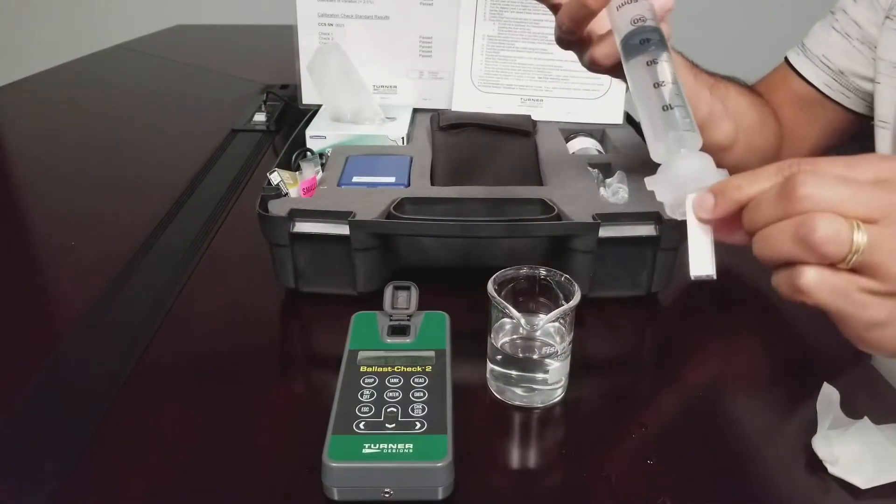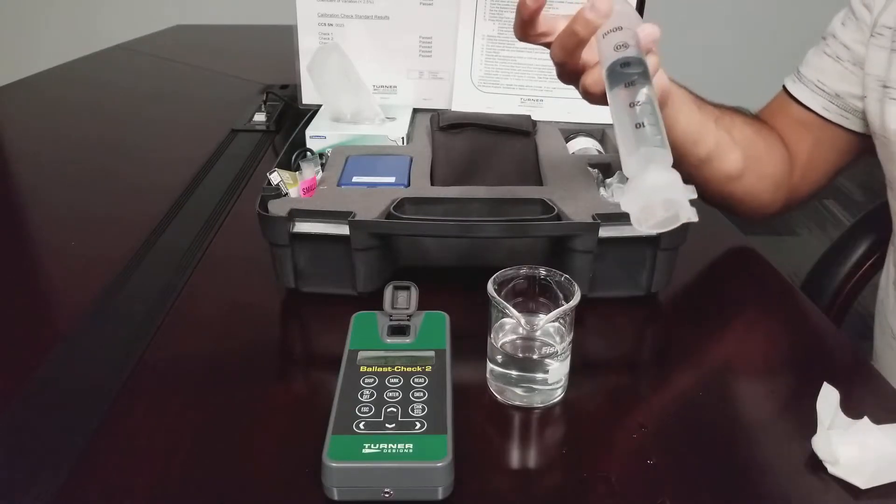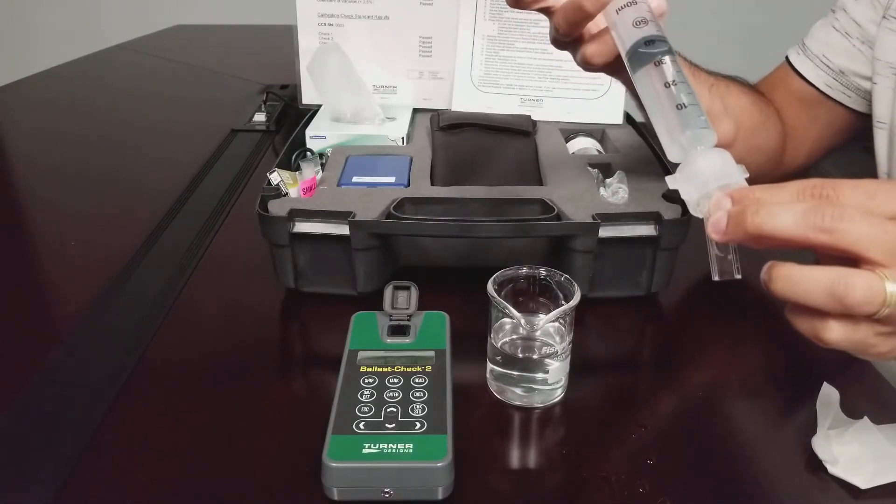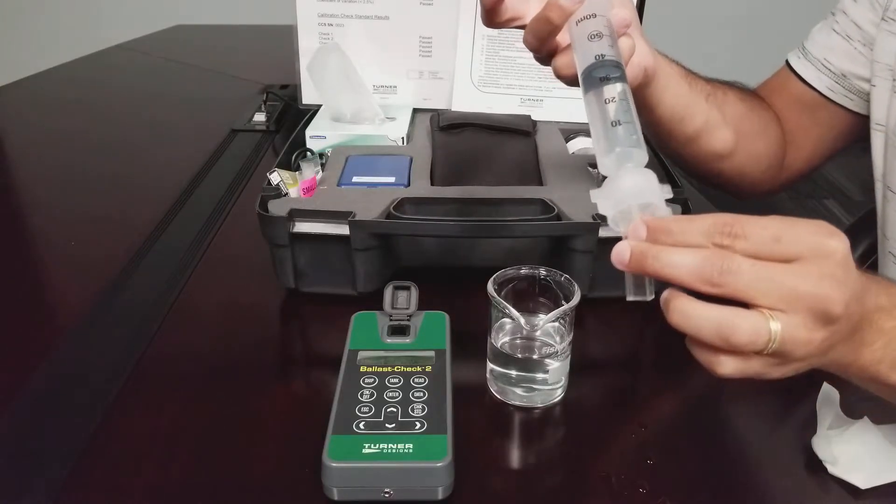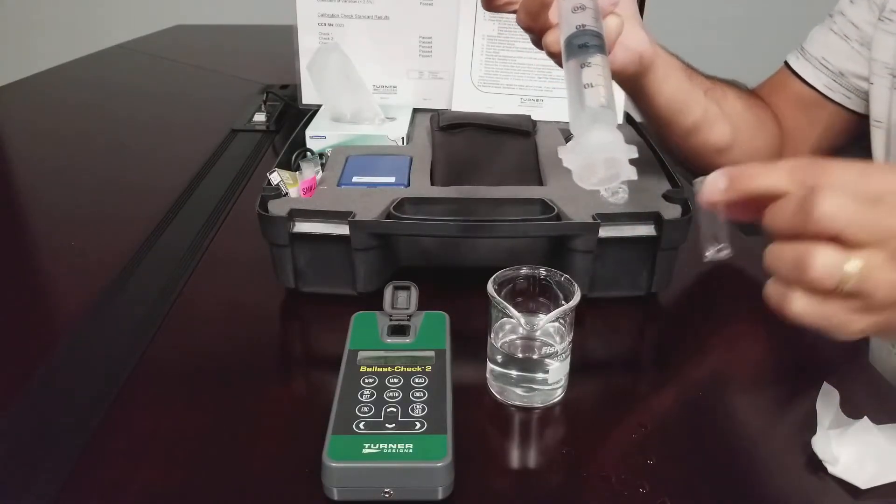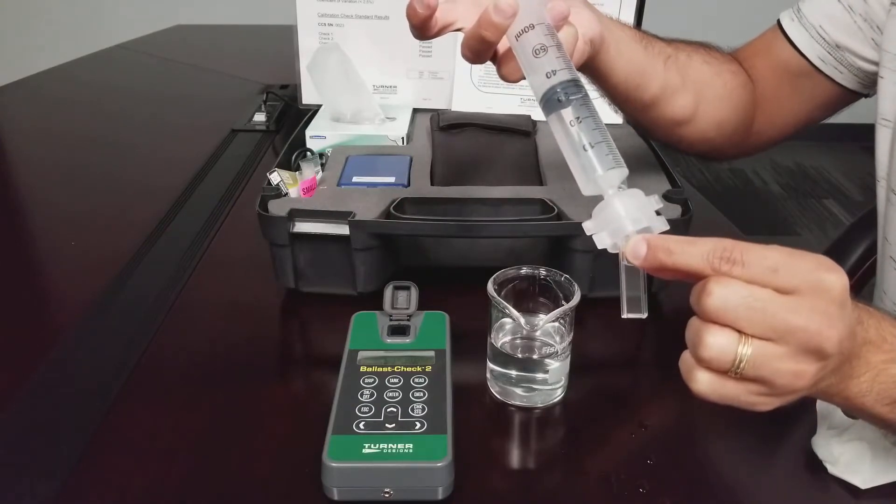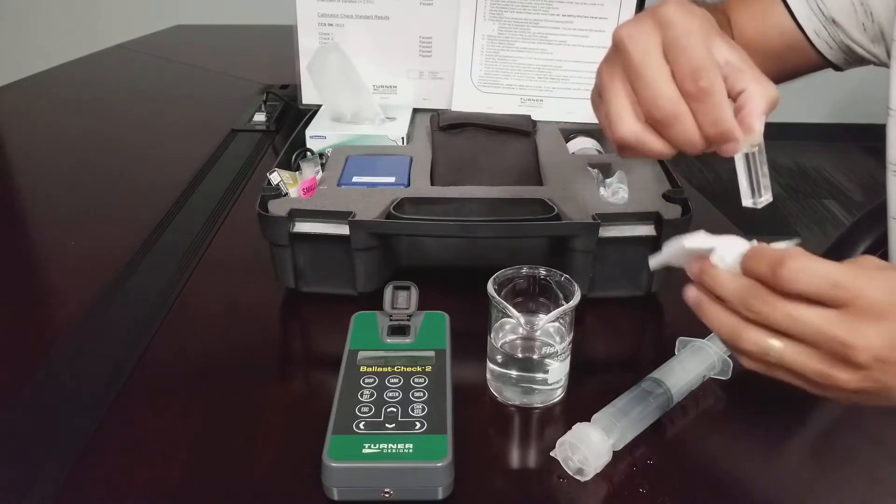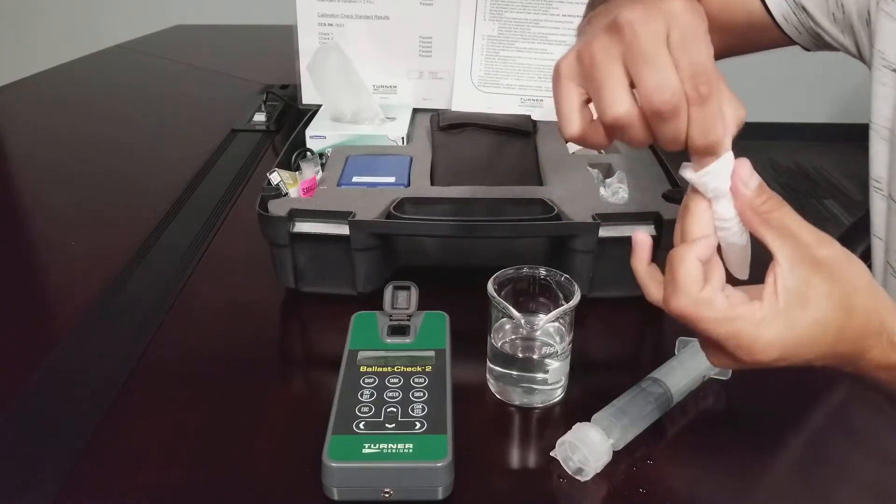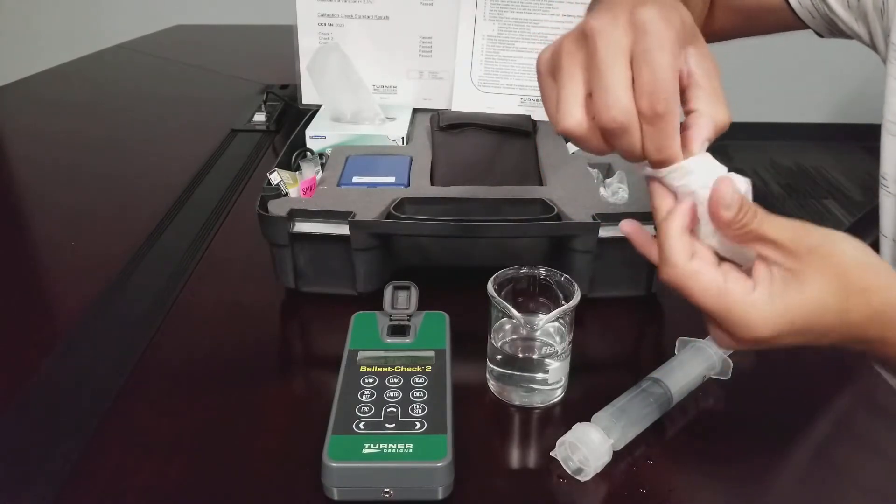Rinse the cuvette 3 times using the filtered sample. Then fill the cuvette 3 quarters full with the filtered sample. Use a kim wipe to wipe down the sides of the cuvette, wiping away any moisture and fingerprints.